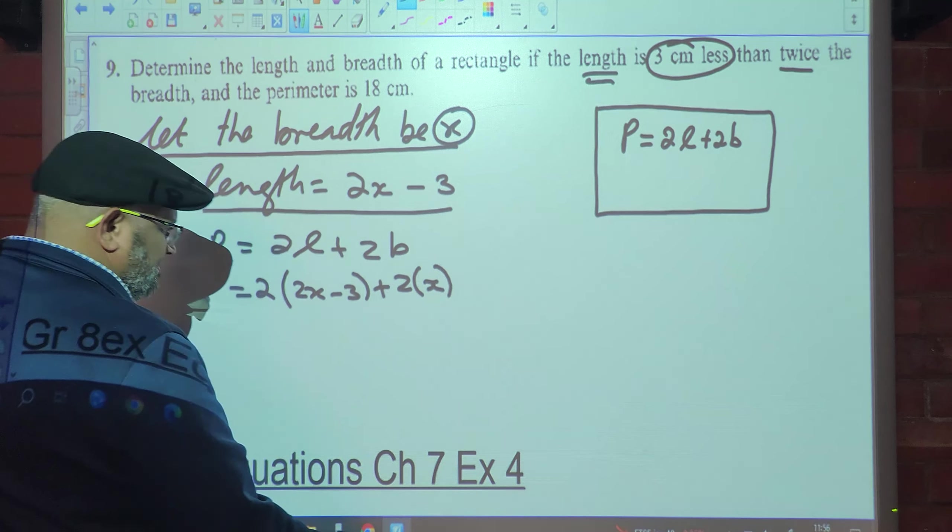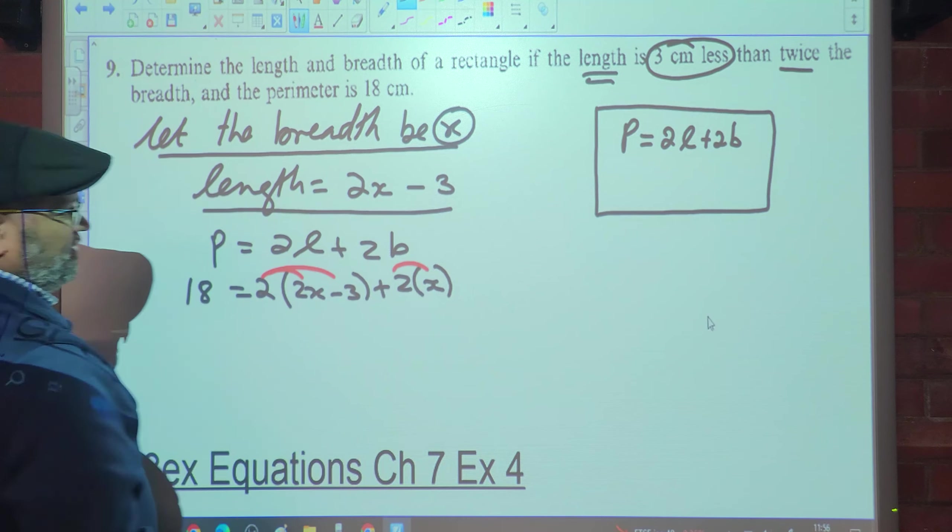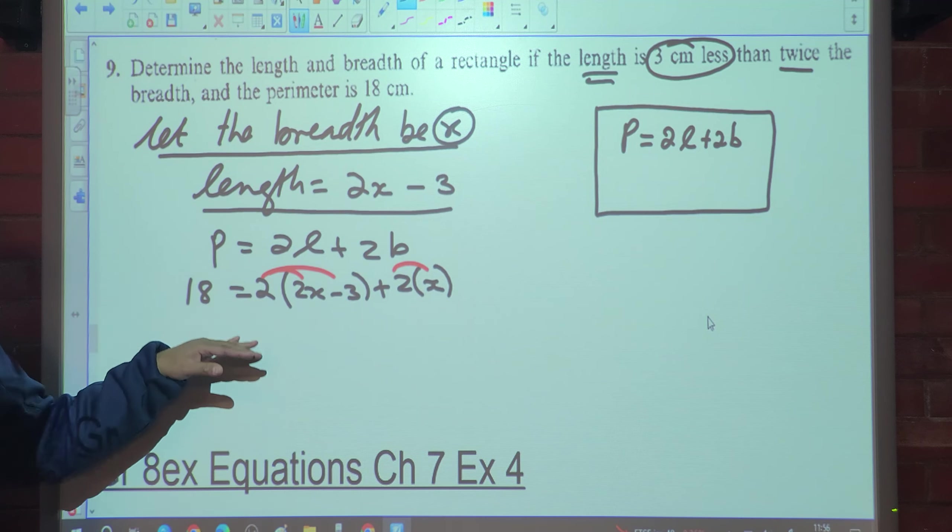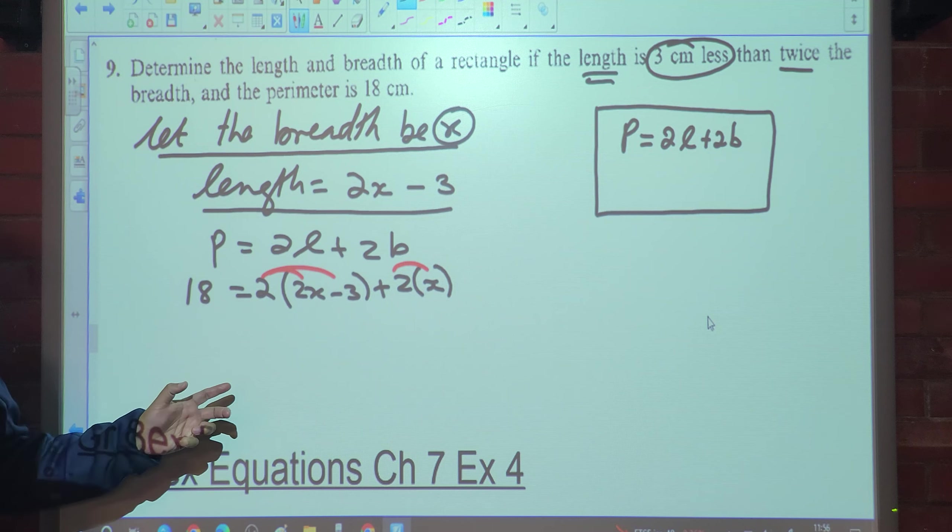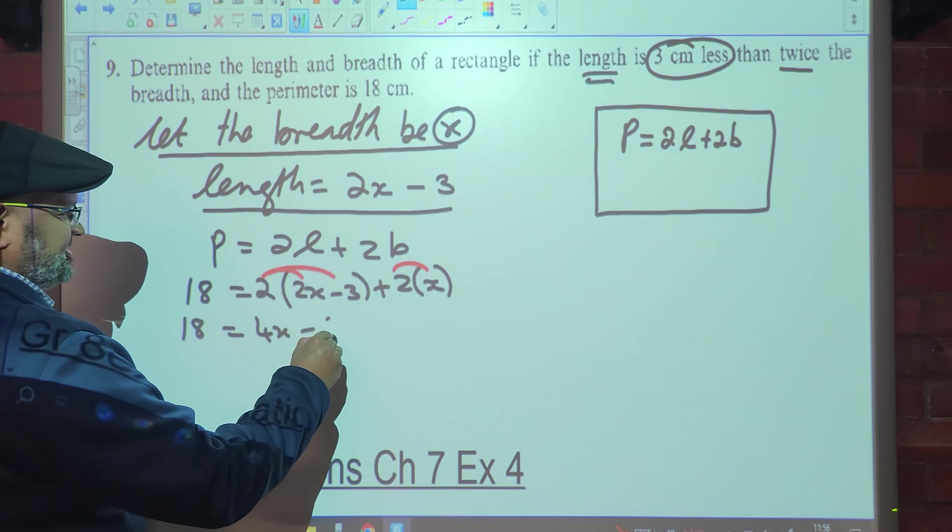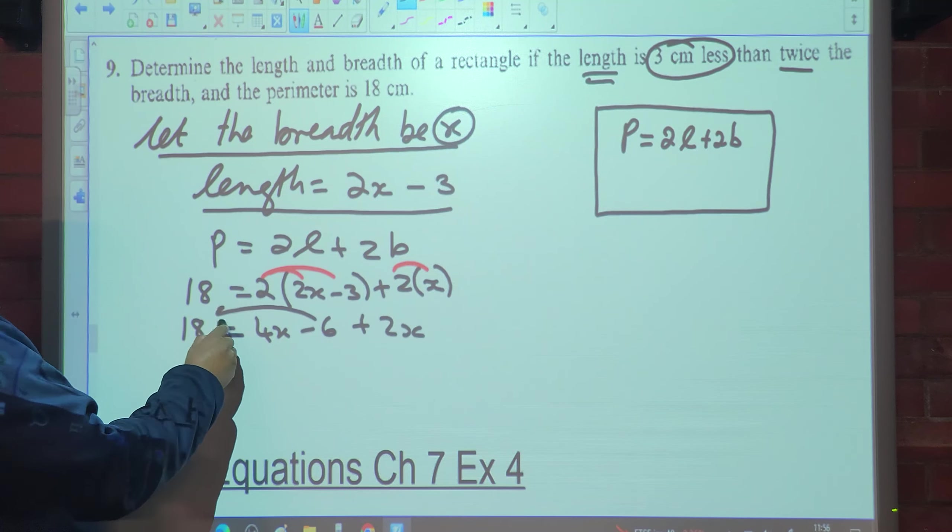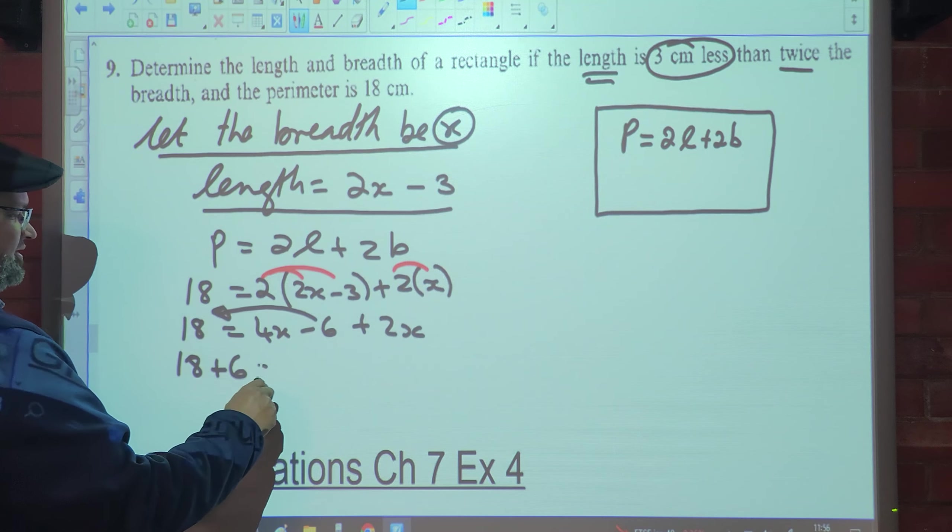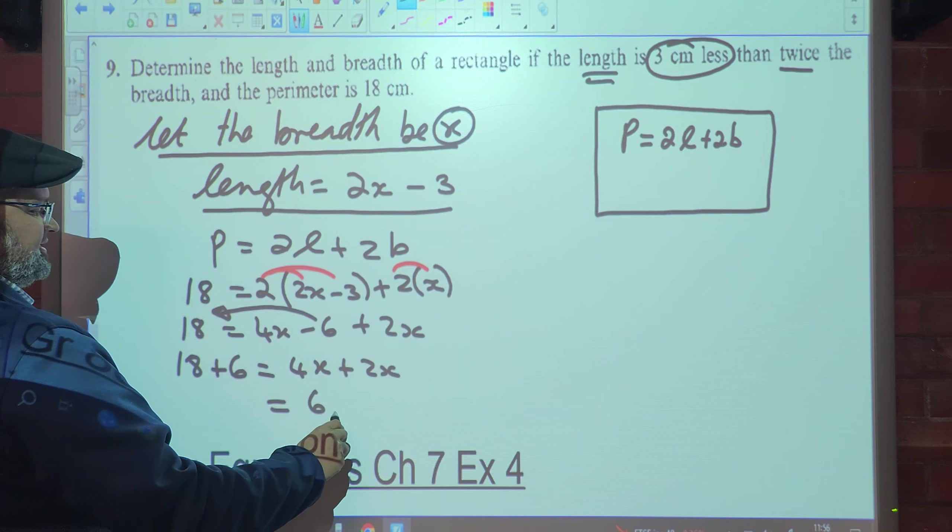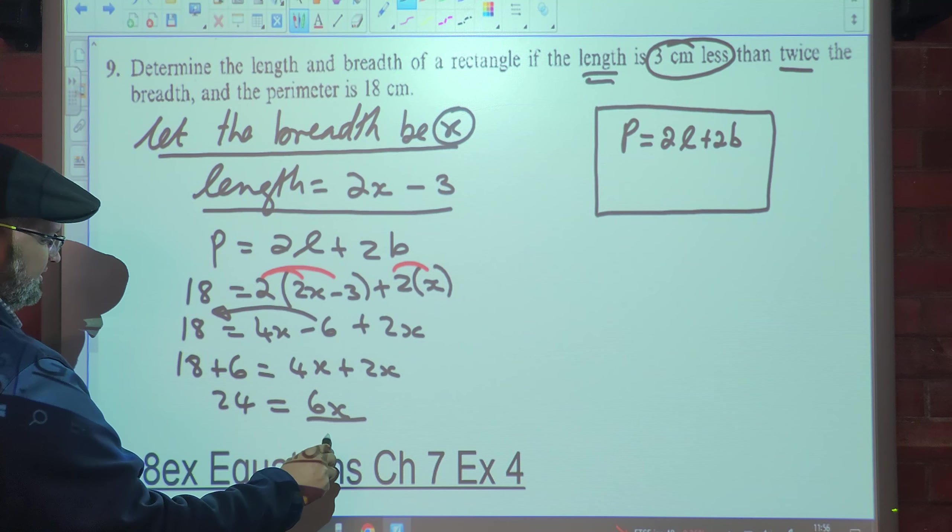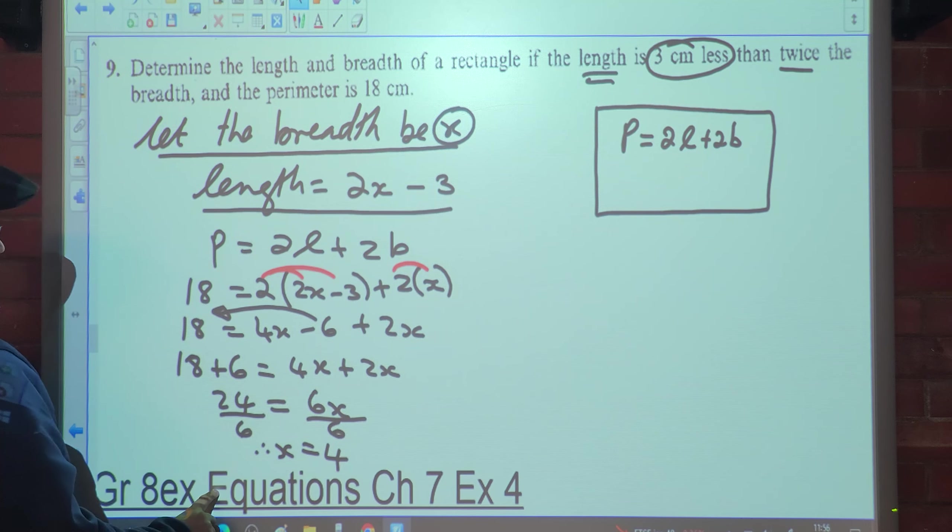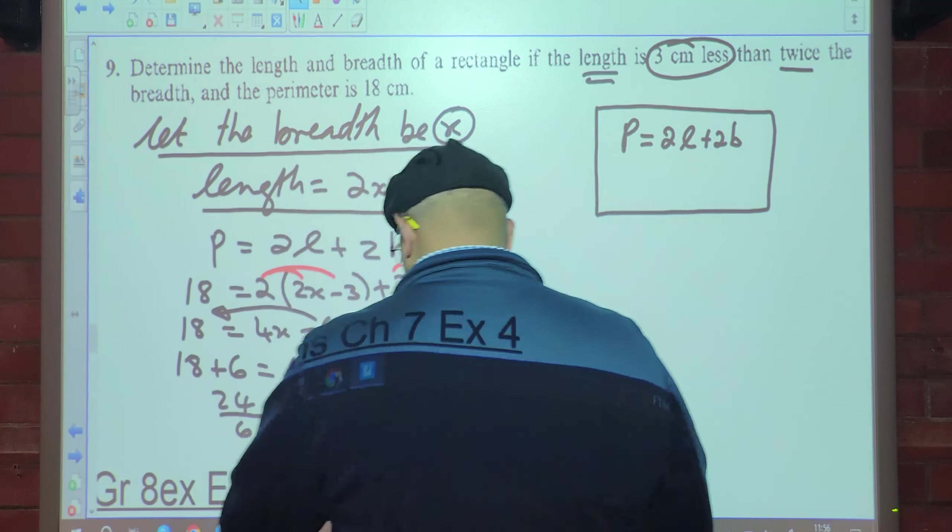Now it becomes a simple equation. You see, once you can set up the initial formula, the equations are normally not that complex. We've got 18 is equal to 4x minus 6 plus 2x. x on one side, numbers on the other side. So 18 plus 6 is equal to 4x plus 2x. 4x plus 2x is 6x equals 24. Divide by 6 both sides, so x is equal to 4. Have I answered the question? No.